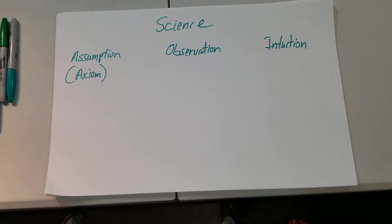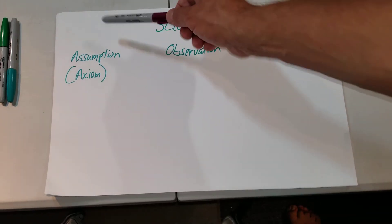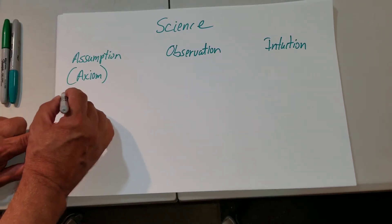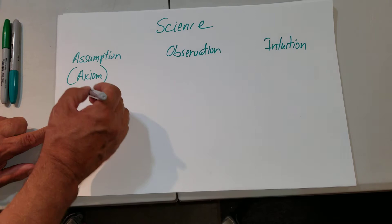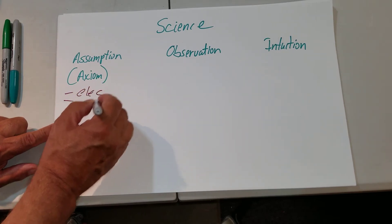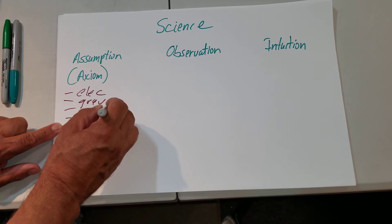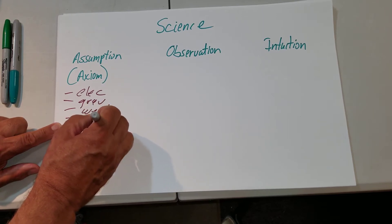I believe science is based on three pillars: assumption, observation, and intuition. Let's start with assumption. Scientists don't use the word assumption, they use the word axiom. What would be an example of an assumption? There are four forces in nature: electromagnetic, gravity, weak, and strong.